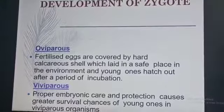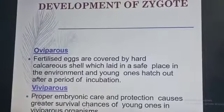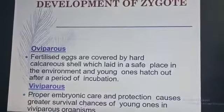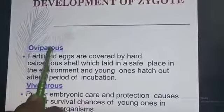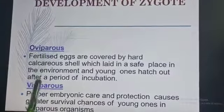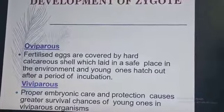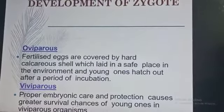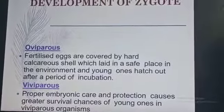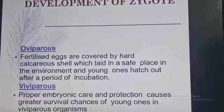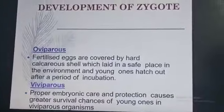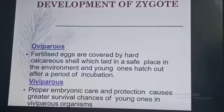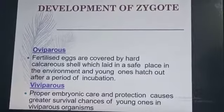There are oviparous and viviparous animals, and the phenomena are called oviparity and viviparity. Oviparous animals are those which lay eggs, while viviparous animals are those which give birth to young ones.